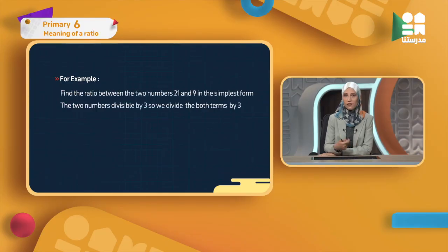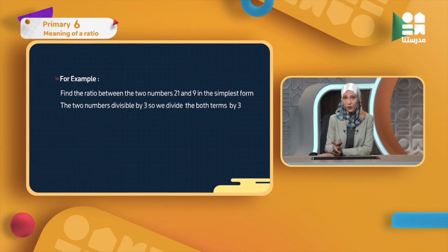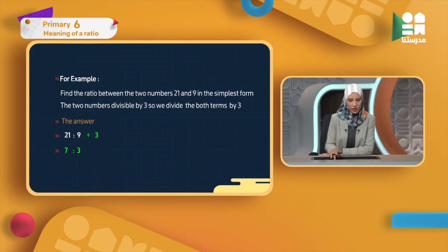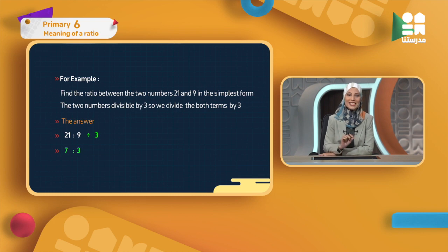Let's take some examples to understand better. Find the ratio between the two numbers 21 and 9 in the simplest form. The two numbers are divisible by 3 — both 21 and 9 are in the 3 times table. I write 21 : 9 and divide by 3. 21 divided by 3 equals 7, and 9 divided by 3 equals 3. So it will be 7 : 3. This is the simplest form.